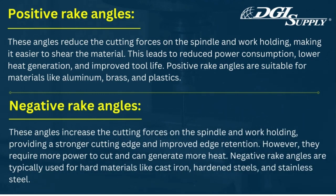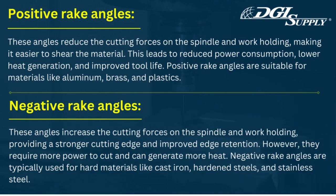Negative rake angles. These angles increase the cutting forces on the spindle and work holding, providing a stronger cutting edge and improved edge retention. However, they require more power to cut and can generate more heat. Negative rake angles are typically used for hard materials like cast iron, hardened steels, and stainless steel.